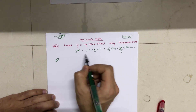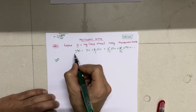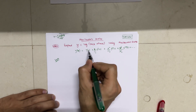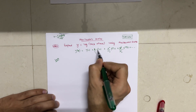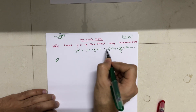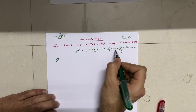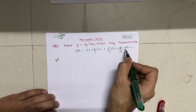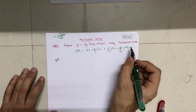You are already aware of the Maclaurin series. It is given by: y(x) = y(0) + x/1! · y'(0) + x²/2! · y''(0) + x³/3! · y'''(0) + so on.